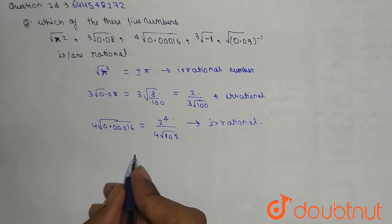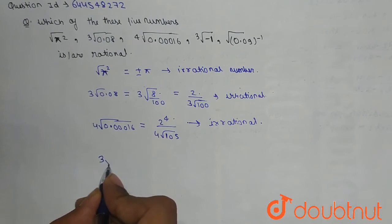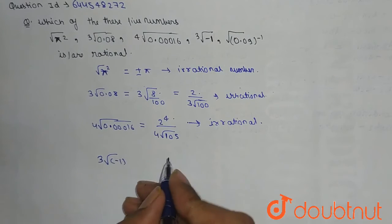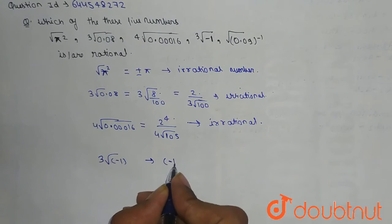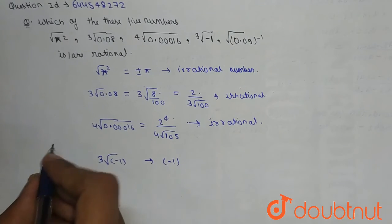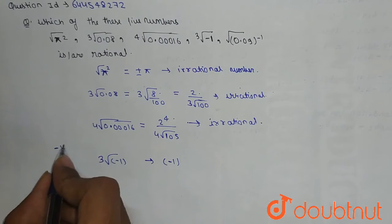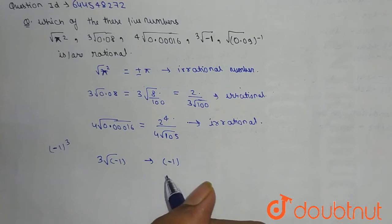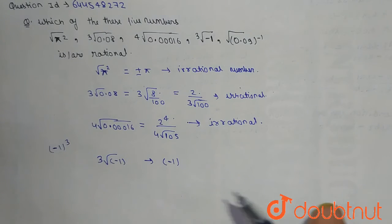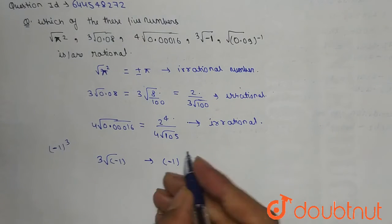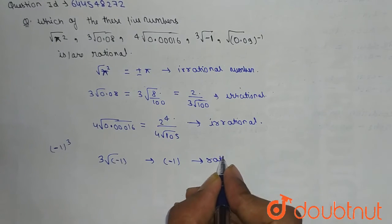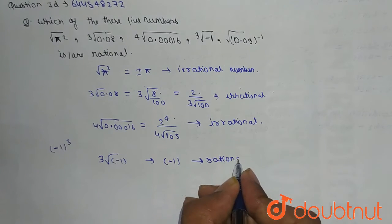Now we check for the cube root of minus 1. When we do the cube of minus 1, we get minus 1. So the cube root of minus 1 is also minus 1. This is a rational number.